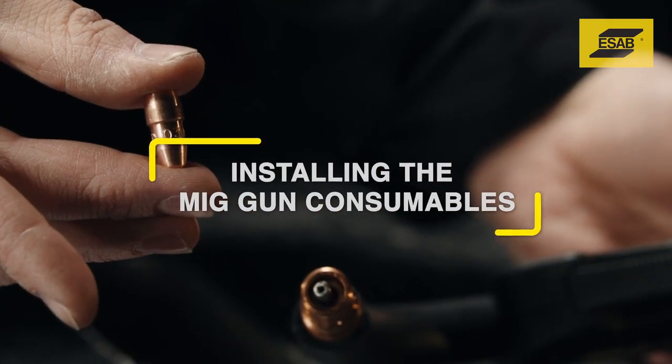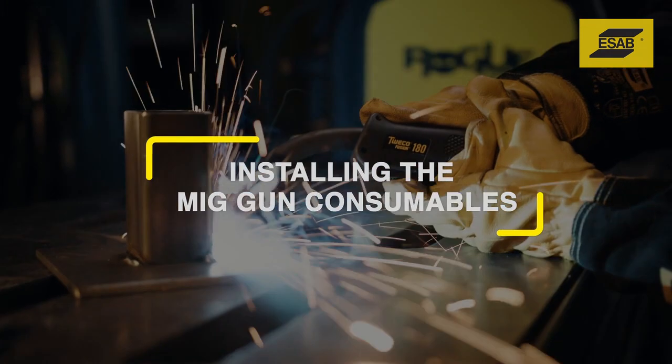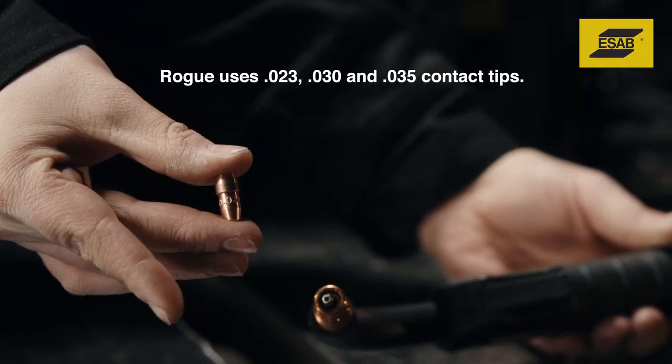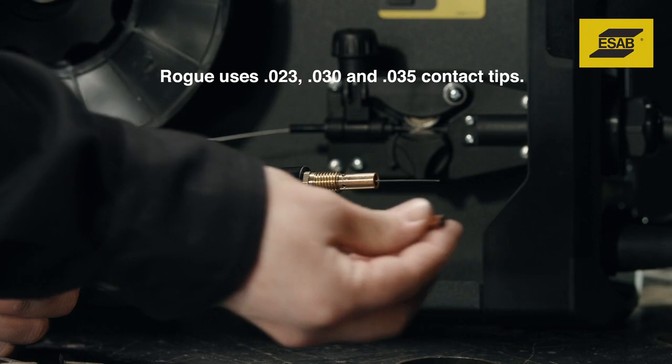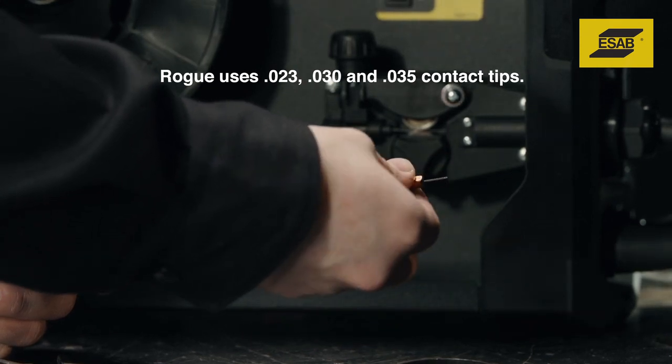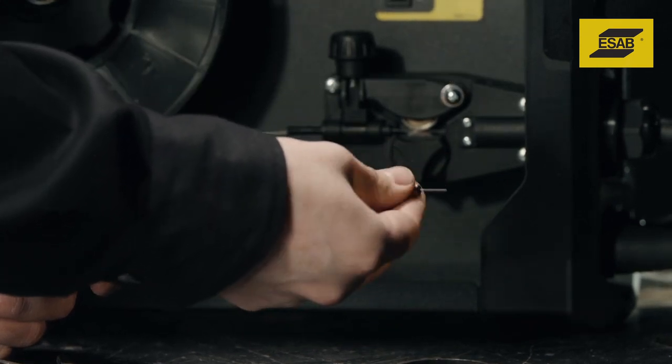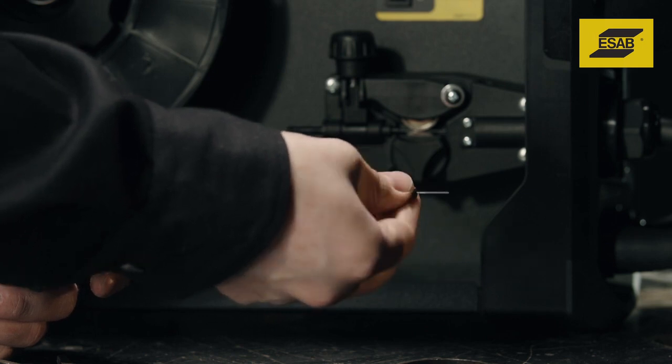Installing MIG gun consumables. To ensure proper arc performance, you must use the contact tip size that corresponds to the wire diameter used. Before installing the contact tip, note that the gun liner is present at the end of the conductor tube.